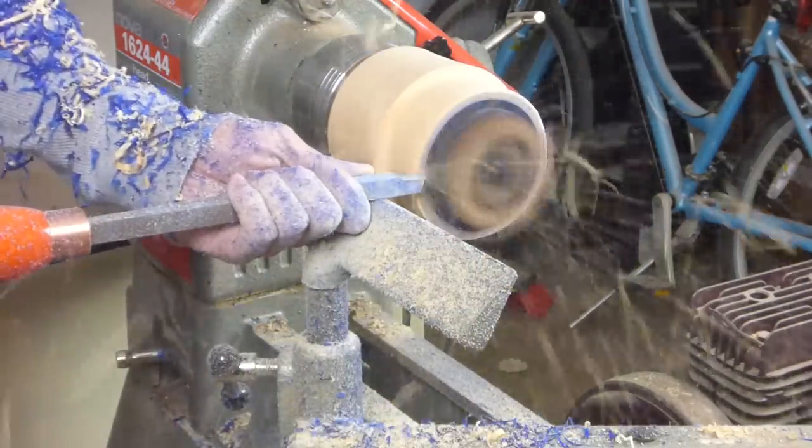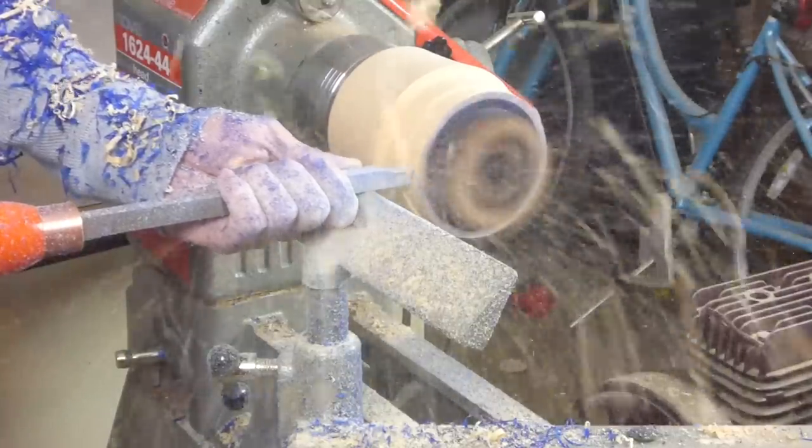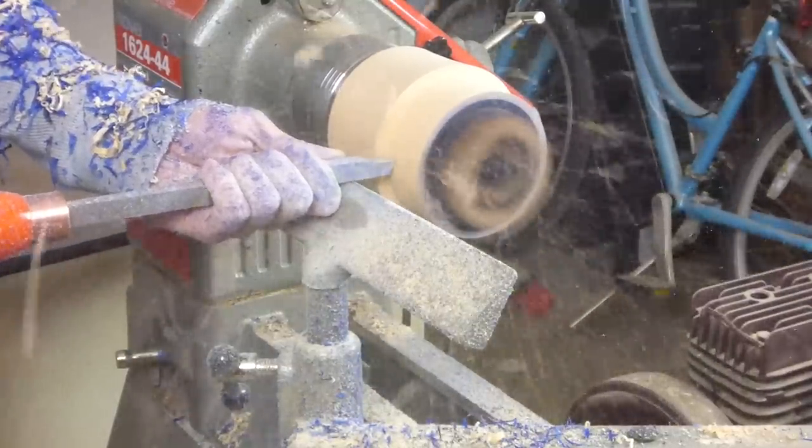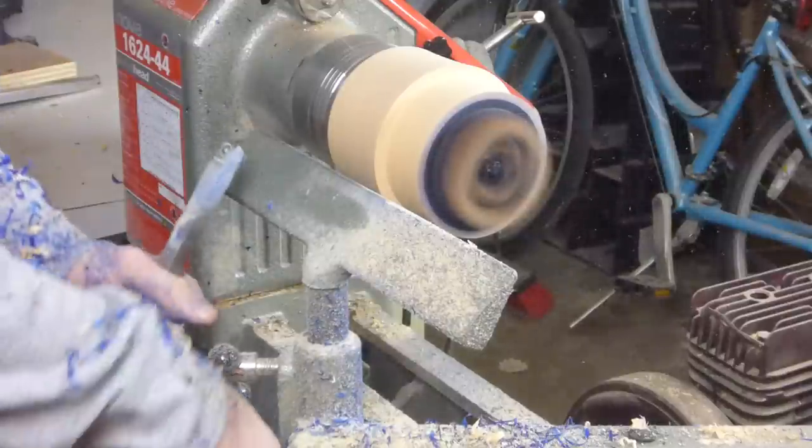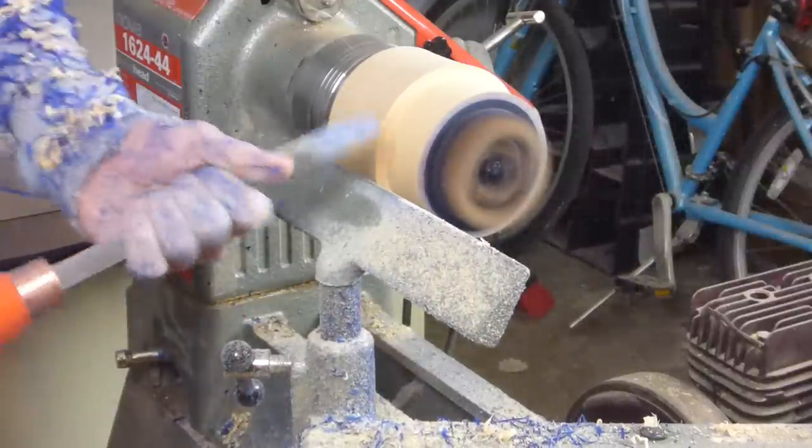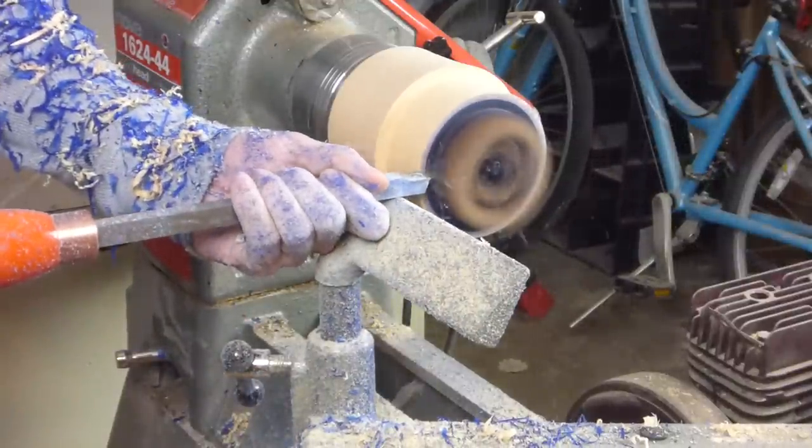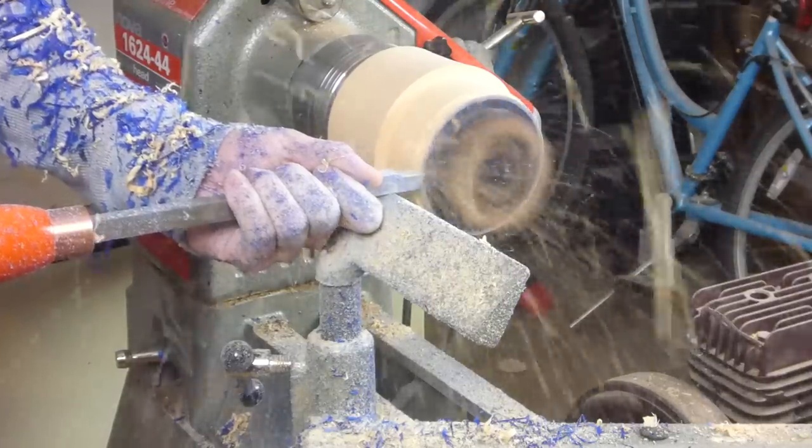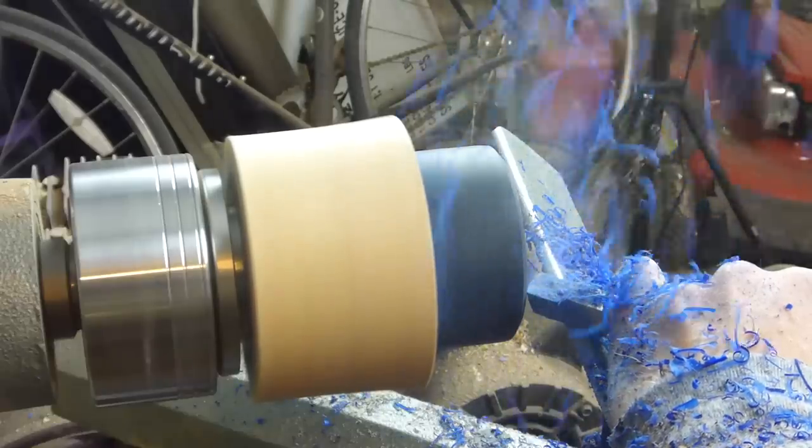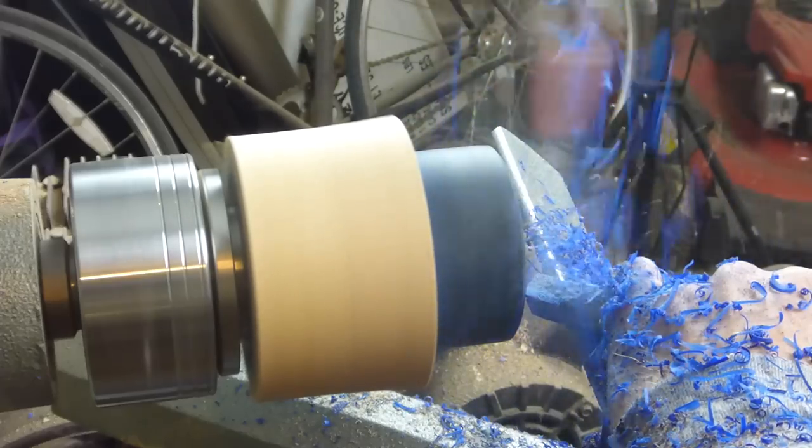The next step was to turn away the scrap wood to reveal the cured resin inside. And I have to say, as dark as the resin looked cured in the mold, the shavings from the lathe were brilliant blue. The shop was instantly transformed into a confetti factory. People were disco dancing. It was very exciting.